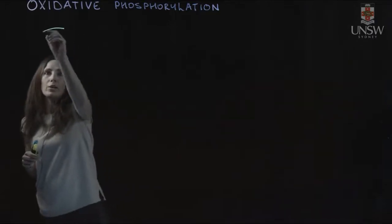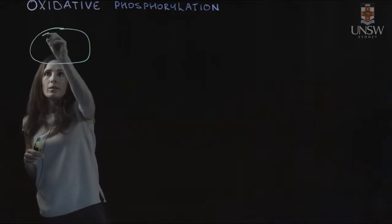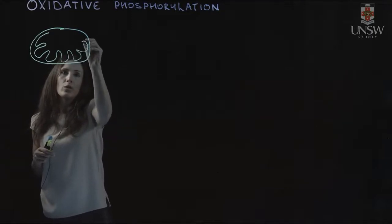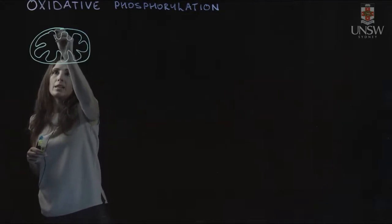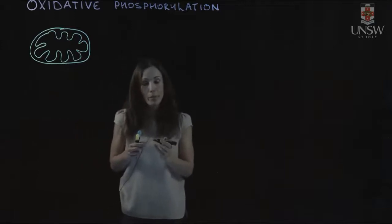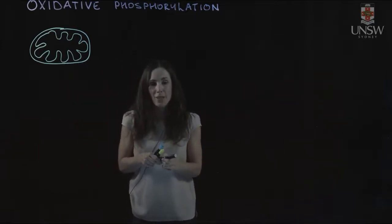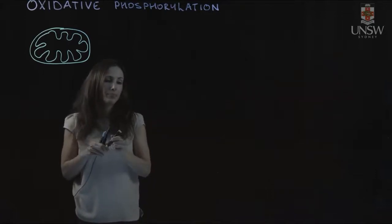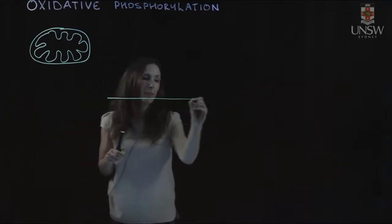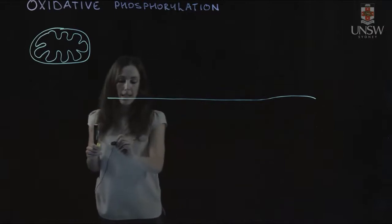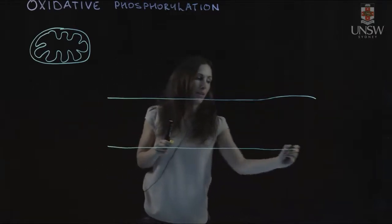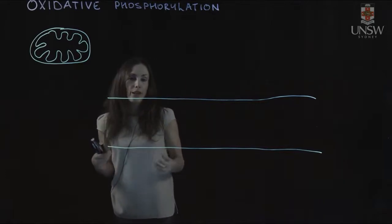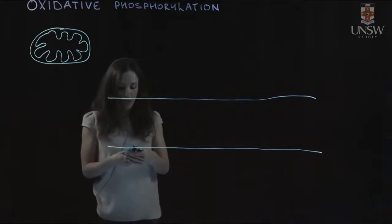The mitochondria has an inner mitochondrial membrane with folds called cristae, and it's on this inner mitochondrial membrane where oxidative phosphorylation occurs. This membrane is selectively permeable, meaning it lets some molecules or ions across and not others. This is an important feature that allows oxidative phosphorylation to occur.